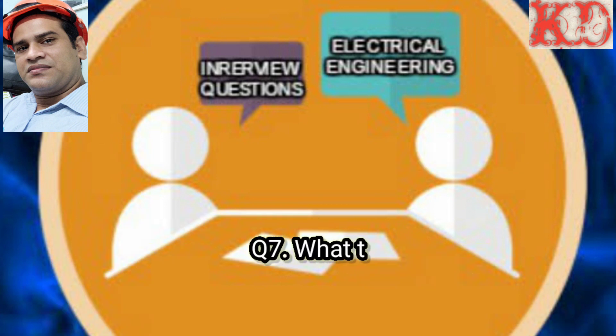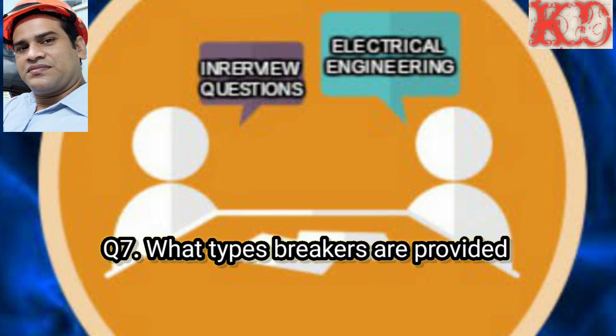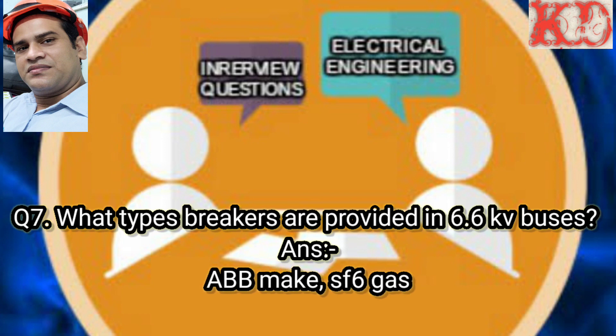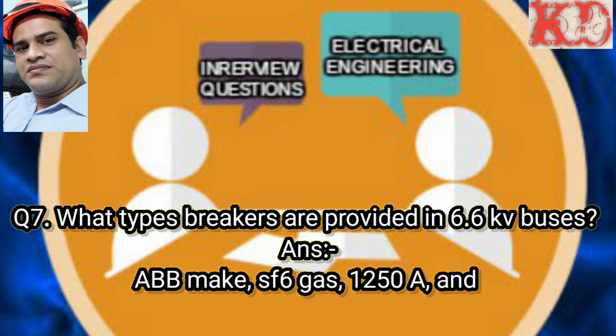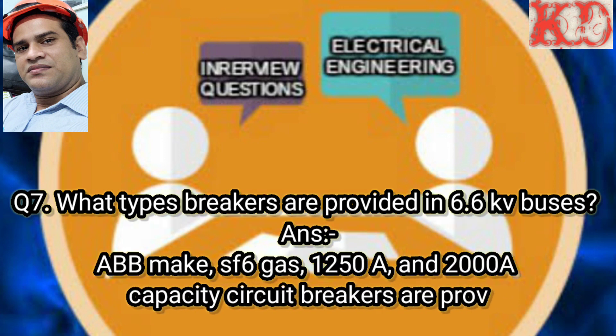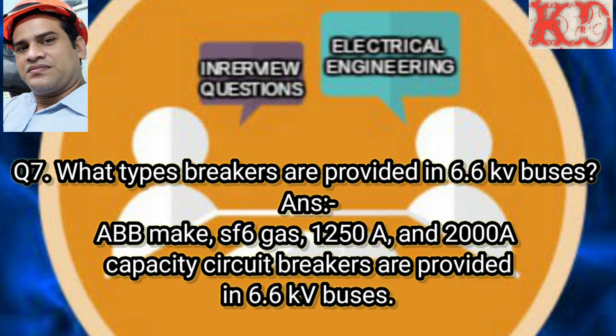Question number 7: What type of breakers are provided in 6.6 KV buses? Answer: ABB make SF6 gas circuit breakers of 1250 ampere and 2000 ampere capacity are provided in 6.6 KV buses.